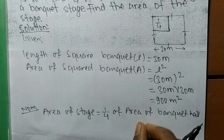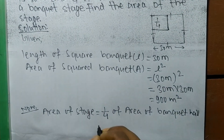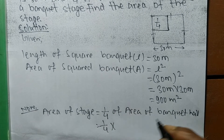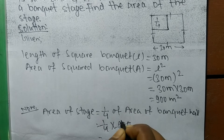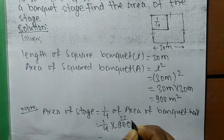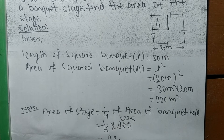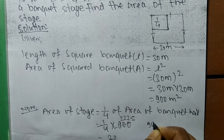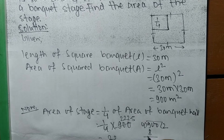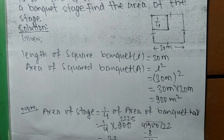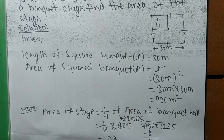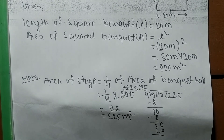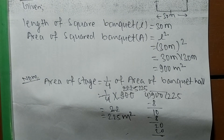So 1/4 part of the whole banquet area is covered by the stage. That means 1/4 multiplied by 900 meter square, which is 900 divided by 4, equals 225 meter square. So the area of the stage is 225 meter square.